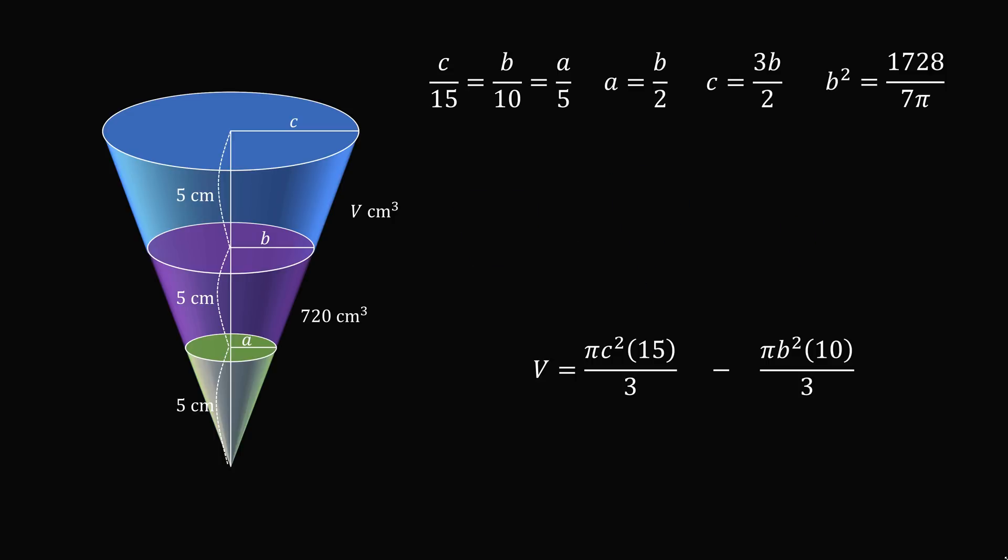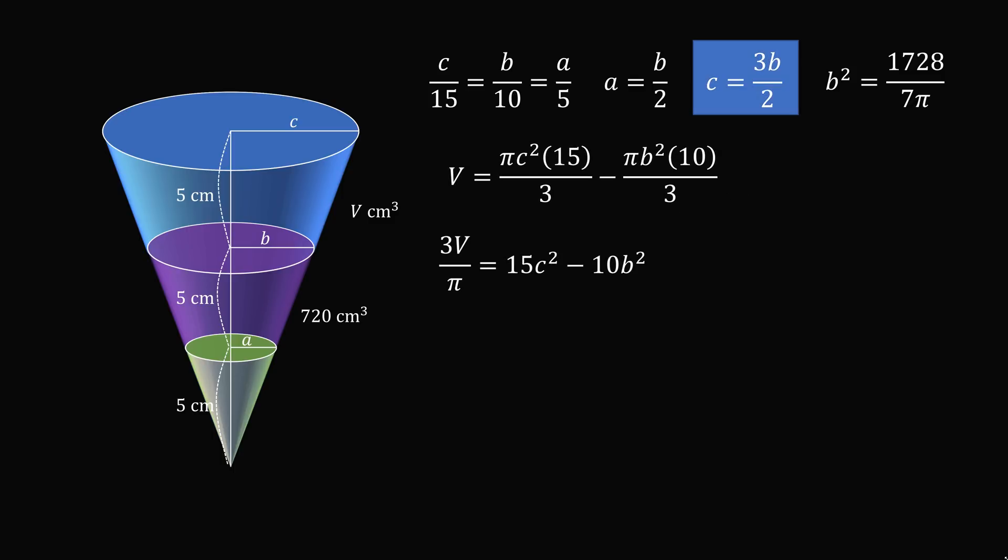So let's work on this equation. We'll multiply both sides by 3 over pi. Then we substitute in that C is equal to 3B over 2. We'll then simplify this equation.